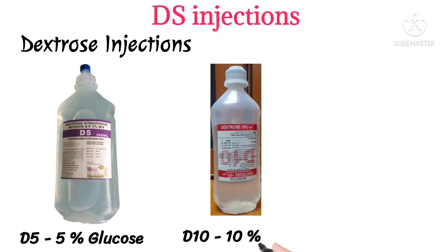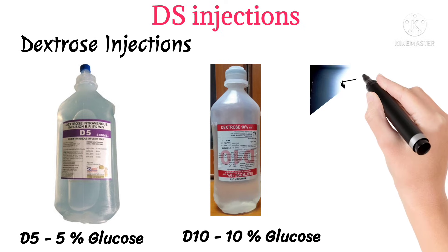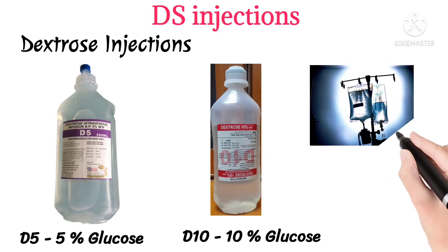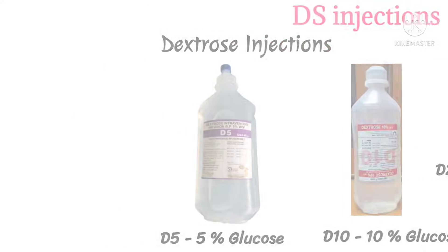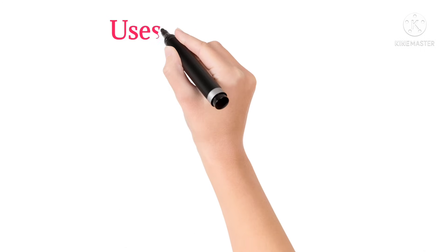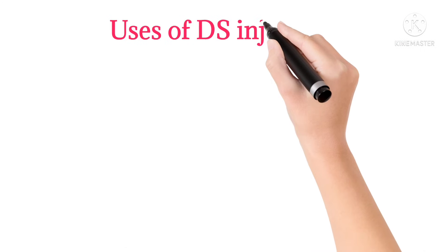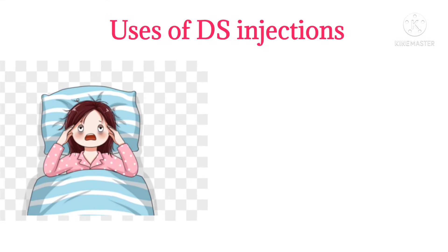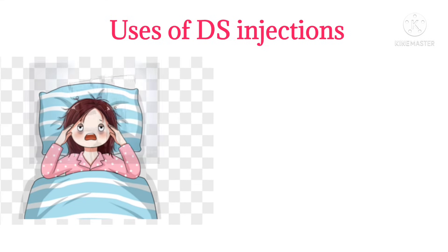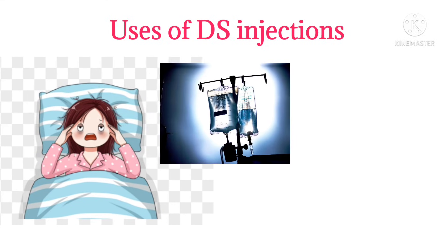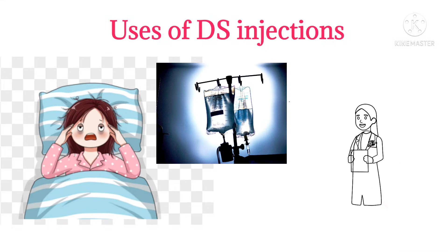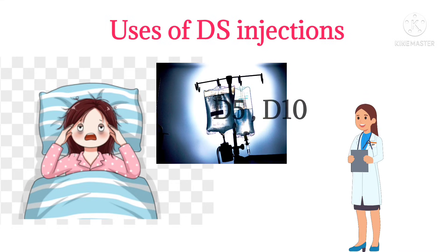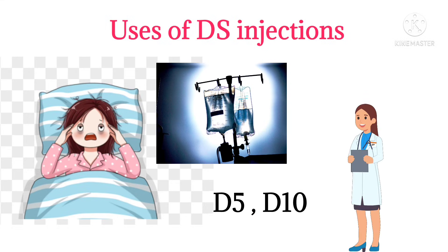In D10 there is 10 percent dextrose, and in D25 there is 25 percent dextrose. Generally dextrose injections are indicated in patients who are unable to take anything by mouth. For caloric supply, doctors prescribe dextrose injections, and most commonly D5 and D10 are used.